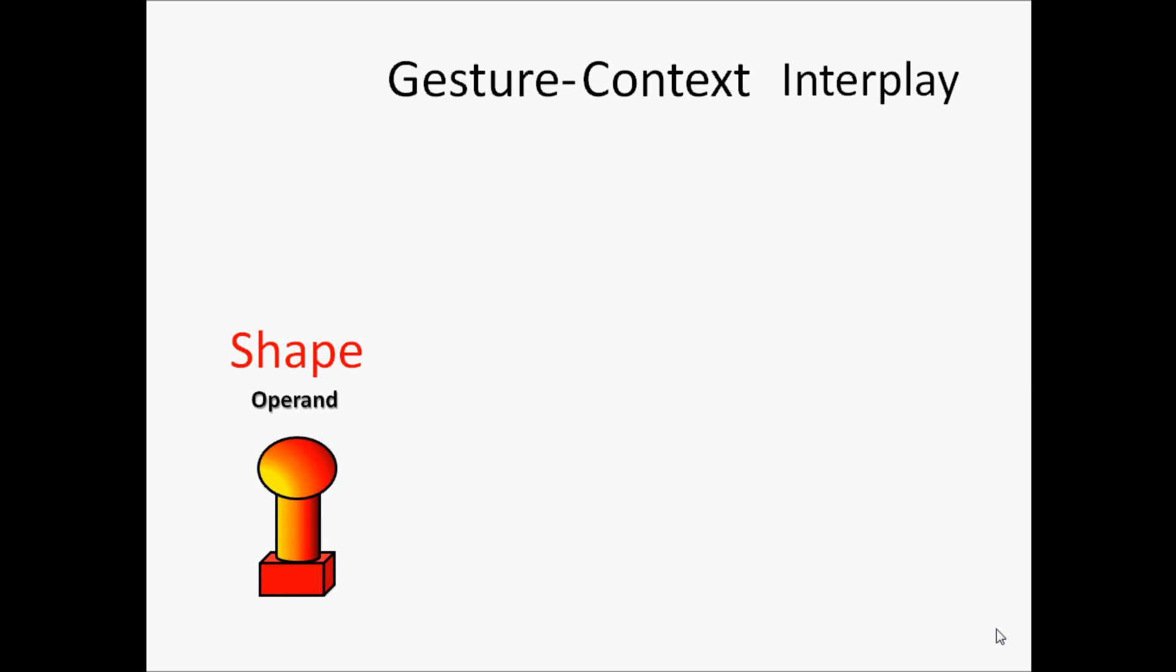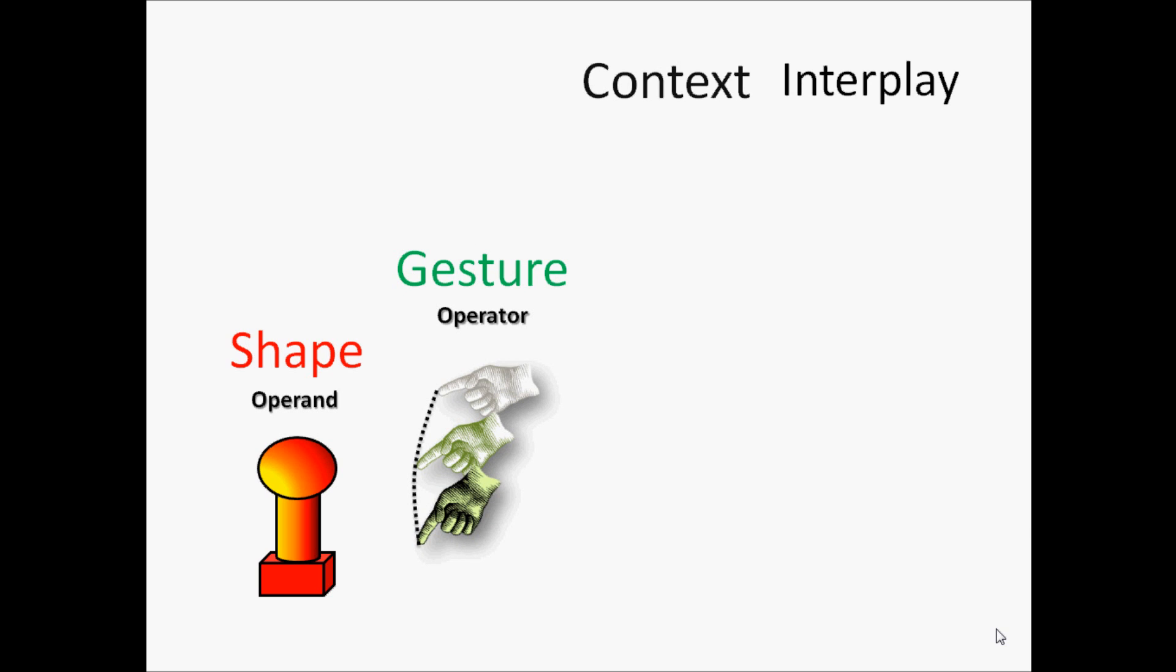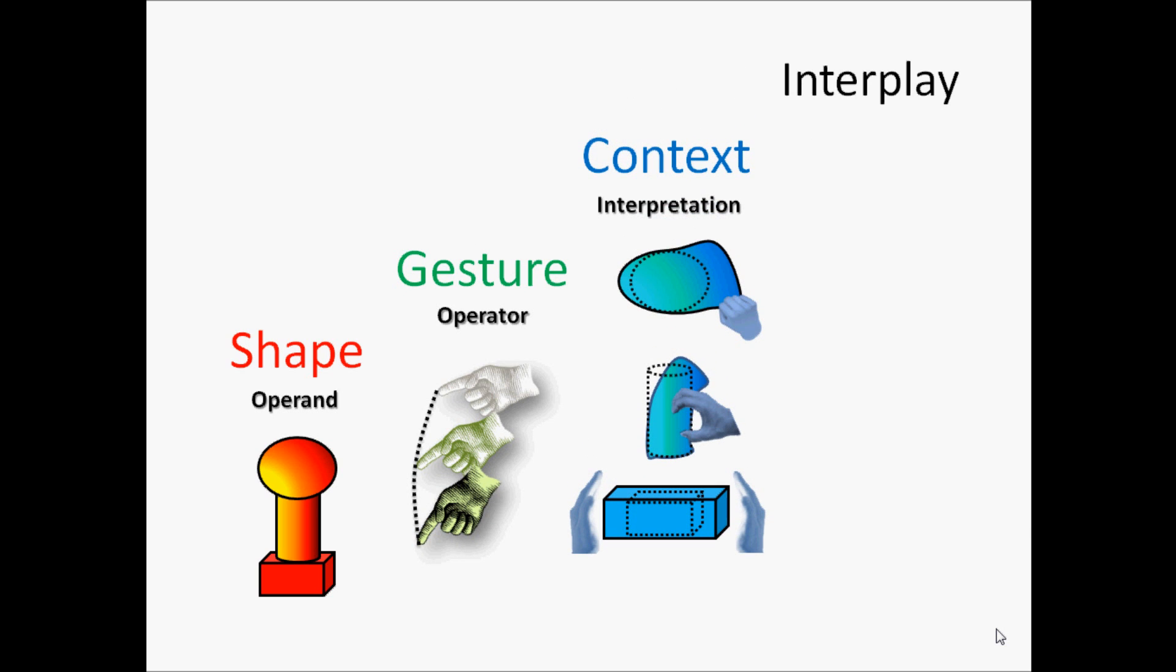Gestures represent operators acting on shapes. The interpretation of how a gesture will operate on a shape is provided by the context. The interplay of shapes and gestures under predefined context defines an operation in the virtual 3D space.